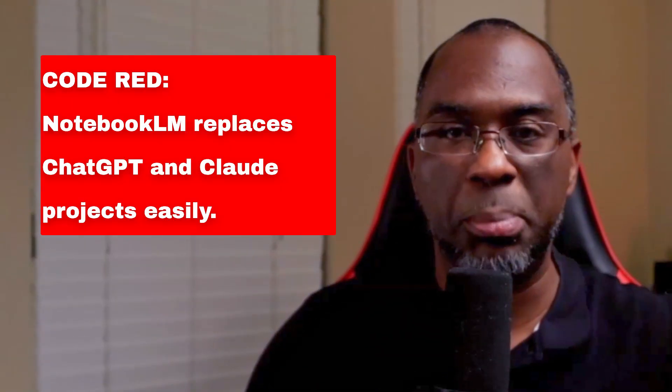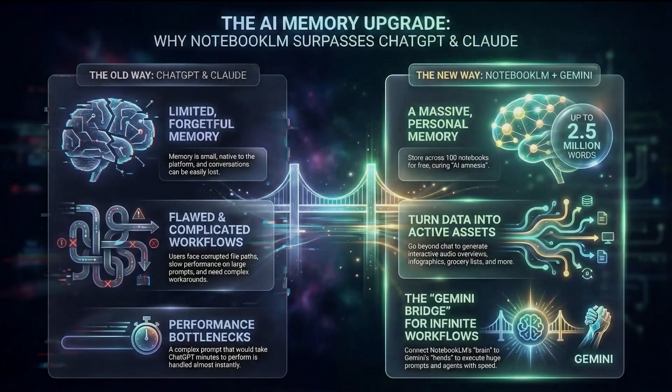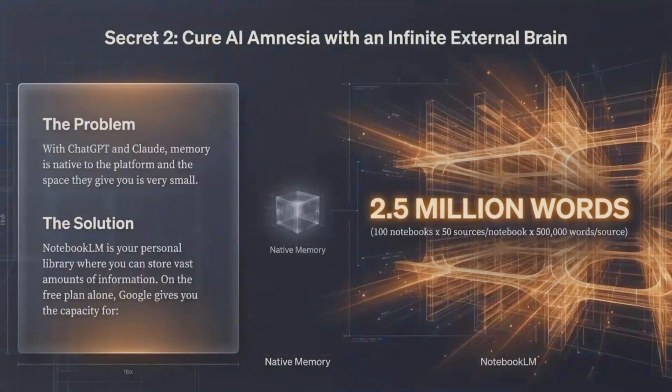I started to realize that NotebookLM wasn't just replacing ChatGPT and Claude projects — it was also replacing their native memory. With ChatGPT and Claude, memory is native to the platform and the space they give you is very small. But NotebookLM is like your own personal library: on the free plan alone you get 100 notebooks, 50 sources per notebook, each source holding up to 500,000 words — meaning Google gives you 2.5 million words of storage in a single account.